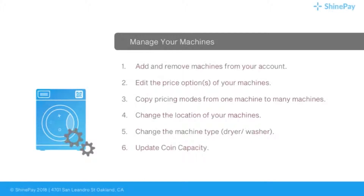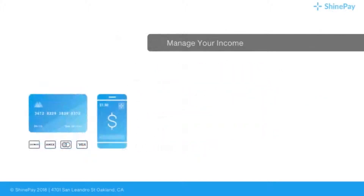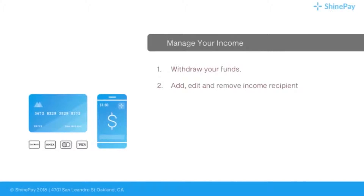Your Shine Insights account actually counts and records all the coins that are getting into your machine. All you need to do is to update or set max capacity for every machine so you would know when to collect your coins. For your income, you can withdraw your funds, add, edit, and remove income recipients, and then you can generate your income report. And you have the income overview.